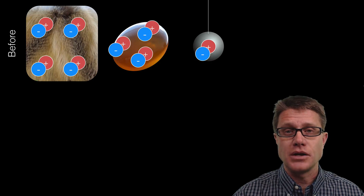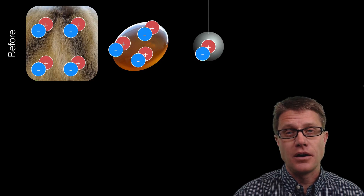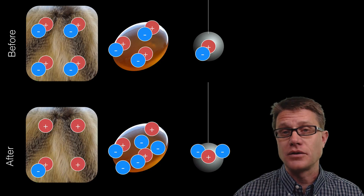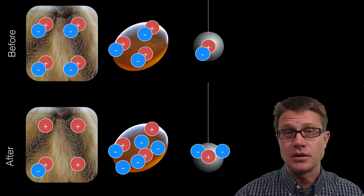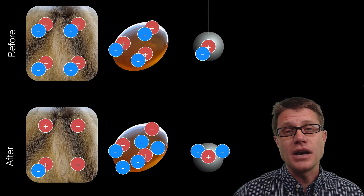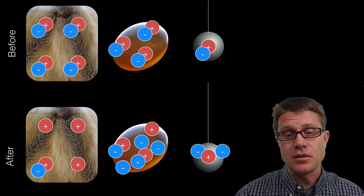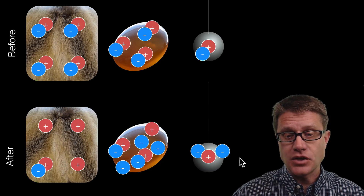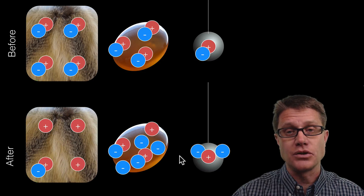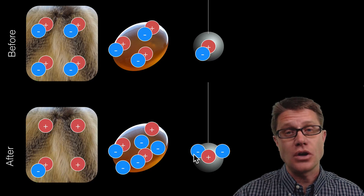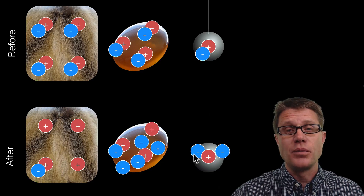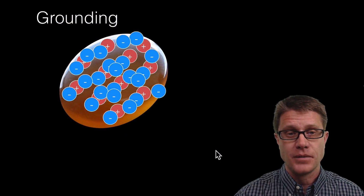Let's look at the conservation of charge here. They all had a net charge of zero to begin with. We transferred some of those electrons to the amber, and then transferred some of those electrons to the pith ball. At the end, this has a negative charge and this has a negative charge, so we have a repulsion between the two. The total number of charges is conserved before and after within the system.